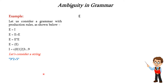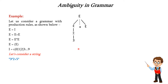Let us start with the start symbol e, which is the root node. This e can be written as e star e, since we need multiplication here. This left e is expanded to i, and i is written as 3. Now expand the right e as e plus e.